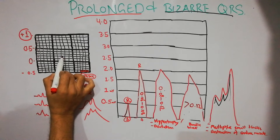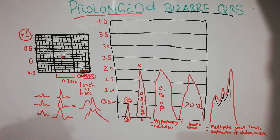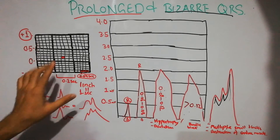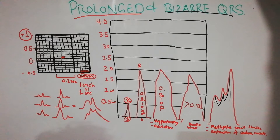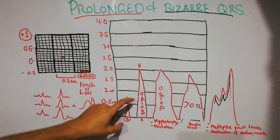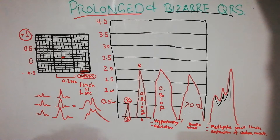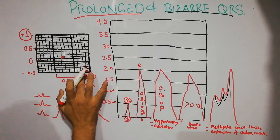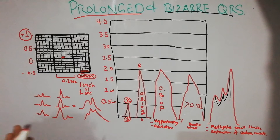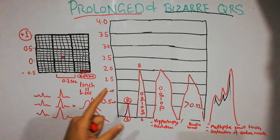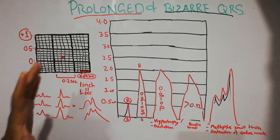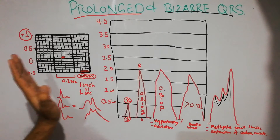The smallest square on the ECG paper represents 0.04 seconds. Normally, the width or duration of the QRS complex is about 0.06 to 0.08 seconds — that is approximately one and a half to two small squares. This is the normal width of a standard QRS complex on a properly calibrated ECG paper.